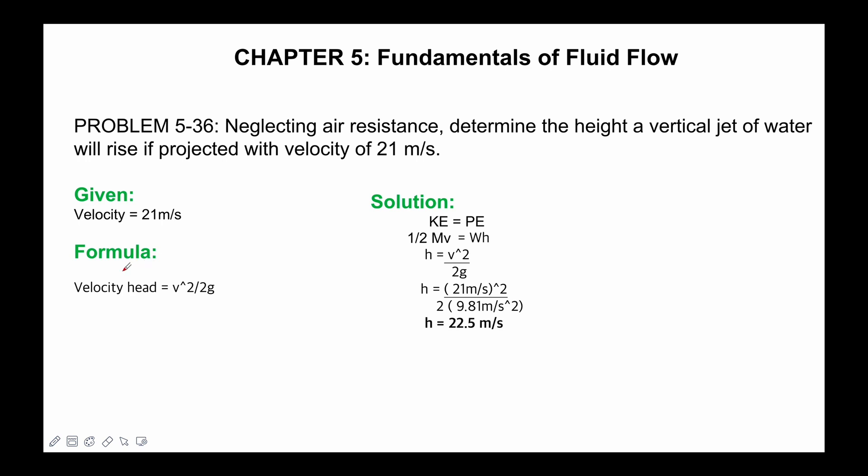In this problem, we will use the formula velocity head equals V squared over 2 times gravity. Kinetic energy equals potential energy: one half fluid mass times V squared equals W times height.